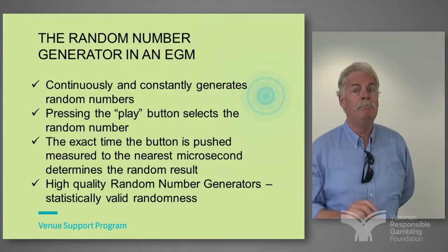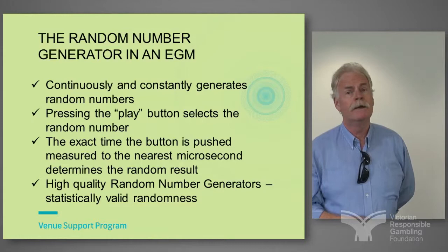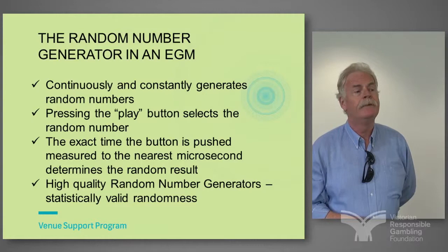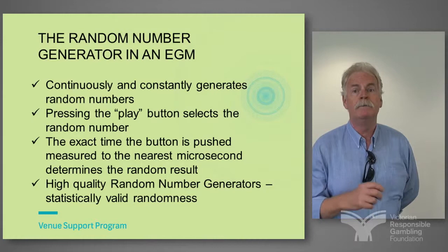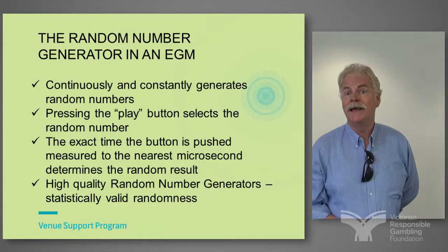You would have had to have pushed at that millionth of a second. We have the highest quality random number generators, bound by the Australian and New Zealand standards for EGMs. They run through some seven statistical processes to ensure the random nature. No machine has the same sequence of random numbers because they all start off with a different random number seed — and that's part of the excellent quality of randomness we have in Victoria.